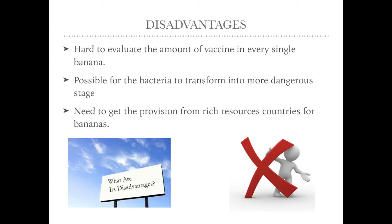On the other hand, banana vaccine also brings some disadvantages. The amount of vaccine is hard for scientists to evaluate. So during experiments, they may waste a lot of bananas and cost a lot of money. Also, it is possible for viruses and bacteria to transform into a more dangerous stage because of genetic modification. This will make diseases harder for doctors to control. The biggest problem is that producers need to get provision from countries which have abundant resources of bananas. So if those countries do not give permission, then we cannot make banana vaccine.